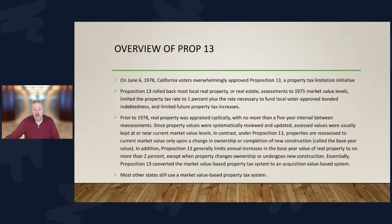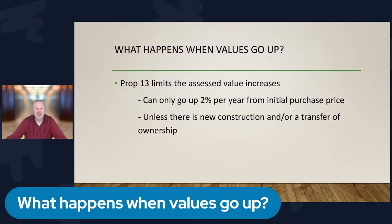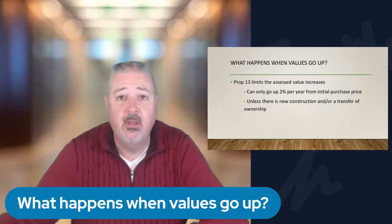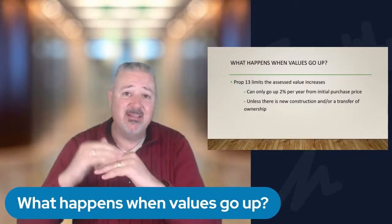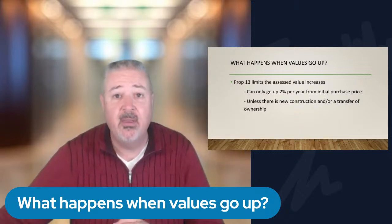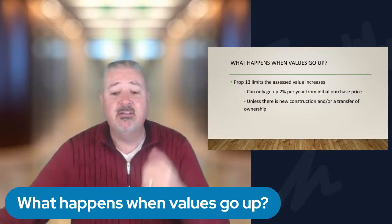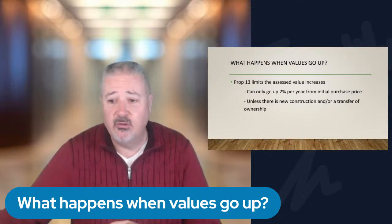Prop 13 limits the increase in property value by 2% per year from the day you initially bought the home. Your home's value when you bought it can only be taxed at that value plus 2% every single year, unless there is new construction on the home or a transfer in ownership. That is critical.